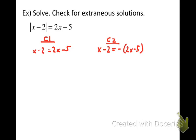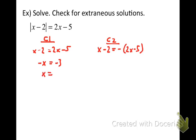Now we solve both equations. For Case 1, let's collect variable terms: subtract 2x from both sides, giving negative x. Then move constants to the right by adding 2, giving negative 5 plus 2 equals negative 3. Then divide both sides by negative 1. So x equals 3 is apparently a solution. Because we're thinking about extraneous solutions, I want to say this is apparently a solution — we'll verify it in a moment.